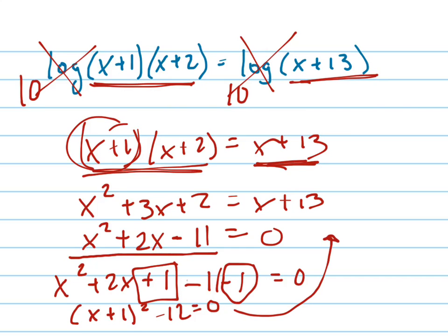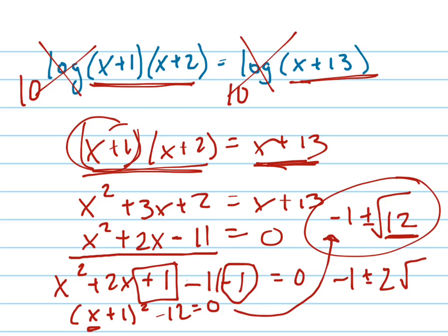And now I can solve that really in my head by adding 12, taking the square root of it, plus or minus the square root of it, and subtracting 1 to get x by itself. There's my two answers. You can simplify that. Negative 1 plus or minus the square root of 12 is 2 root 3. So there are your answers.